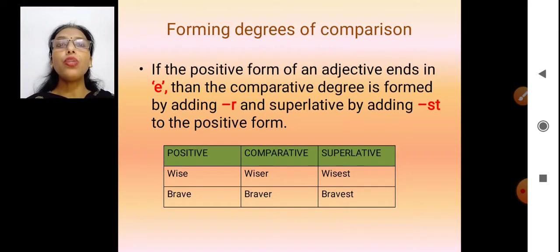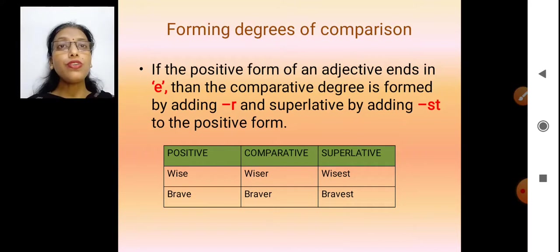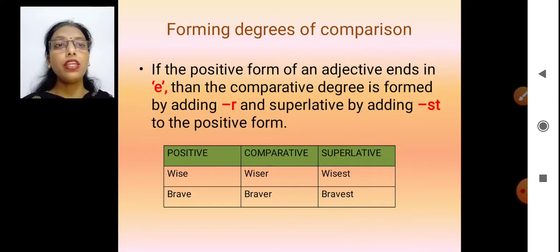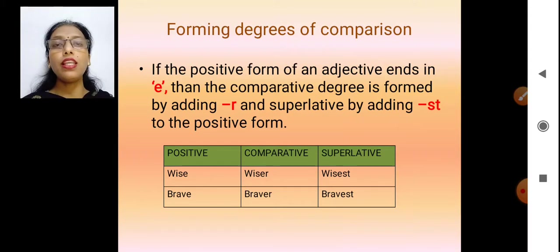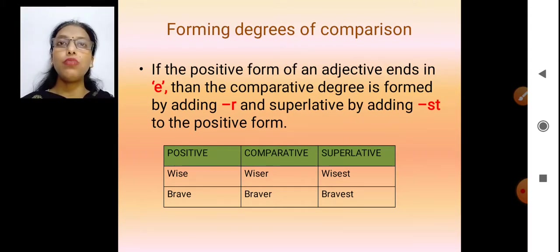The second rule: if the last letter of the word is already -e, then we will just add -r in the comparative and -st in the superlative. Like 'wise' — the -e is at the end, so we get wiser and wisest. The -er and -est endings are still added.